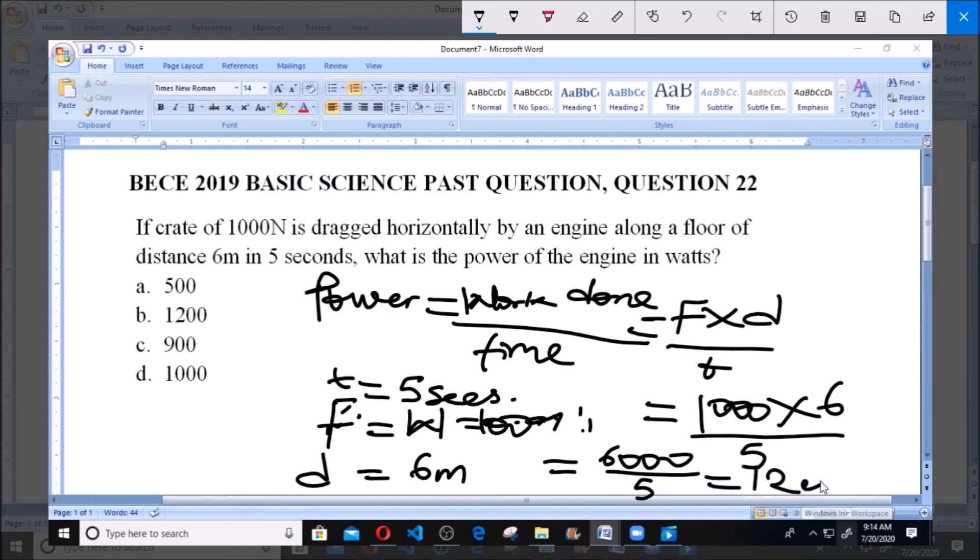So therefore, the power of the engine in watts to drag a 1000 Newton crate along a distance of 6 meters in 5 seconds is equals to 1200 watts. So 1200, option B, is our answer. Thank you very much. Please ensure you subscribe to our YouTube channel.